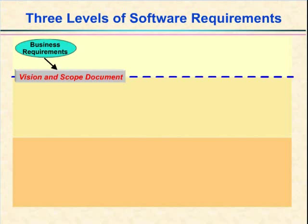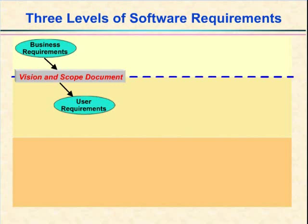Therefore, we need to go down to the second level of requirements: the user requirements. User requirements are a kind of 'what' information. Just as business requirements explain why to undertake a project, user requirements answer the question: what will the user be able to do with the system? For many, but not all types of projects, use cases are a good way to have this conversation about user requirements. A use case is simply a task or a goal that users need to accomplish with the help of the product.